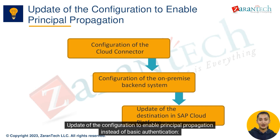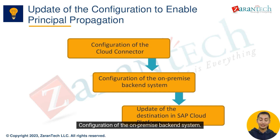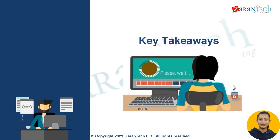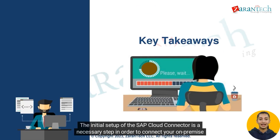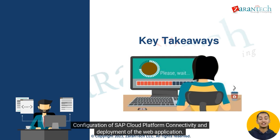To update the configuration to enable principle propagation instead of basic authentication, the following steps are required: configuration of the cloud connector, configuration of the on-premise backend system, and update of the destination in SAP Cloud Platform. The initial setup of the SAP Cloud Connector is a necessary step in order to connect your on-premise SAP systems to the SAP Cloud Platform.